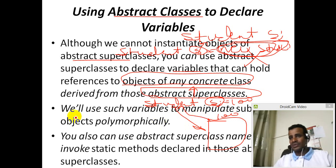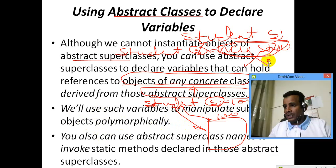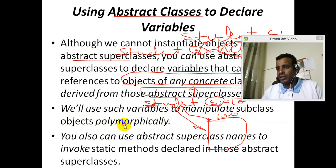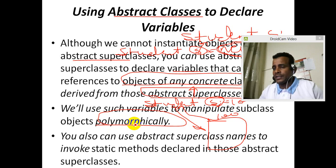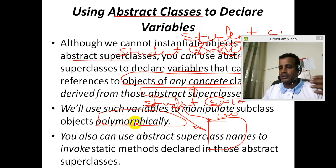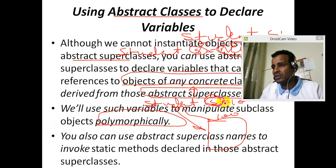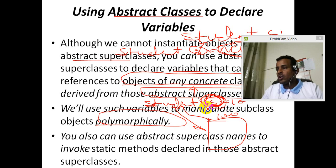This is an abstract class. Such variables can be used to manipulate subclass objects polymorphically. This is an area — circle, triangle, rectangle — processed polymorphically, one by one. This is an area that you can use — an extended object reference.